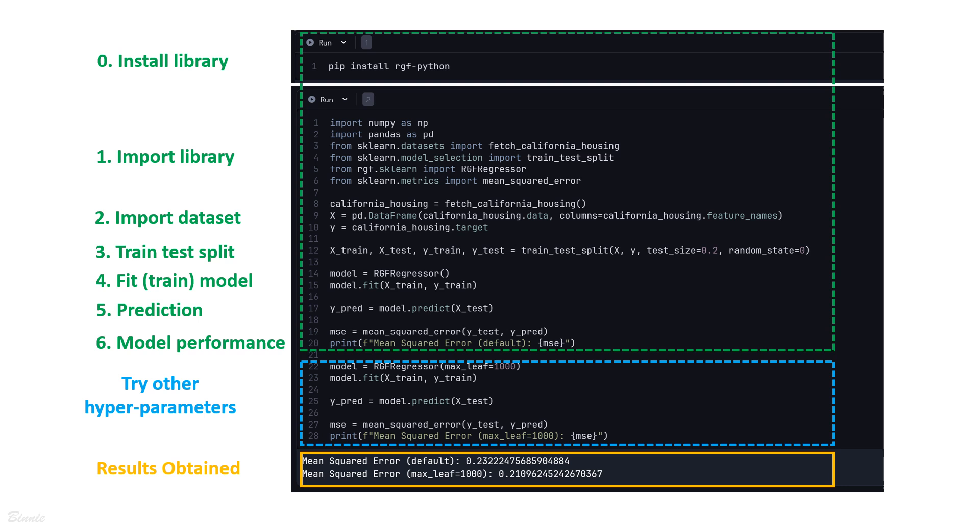Then we split the dataset into training and testing dataset. Next, we train the RGF regressor and make predictions. Finally, we can evaluate the model by mean squared error.